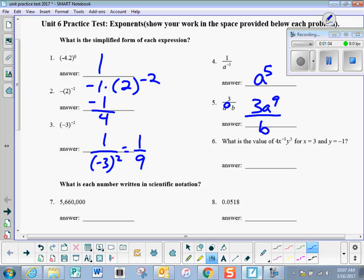On number 6, we have 4 times 3 to the negative 3 times negative 1 to the third. So I'm going to have 4 in the numerator times negative 1 over 3 to the third, because to make that negative exponent positive, I put it in the denominator. And then 4 times negative 1 is negative 4, and then 3 to the third is 27. So it would be negative 4 27ths.